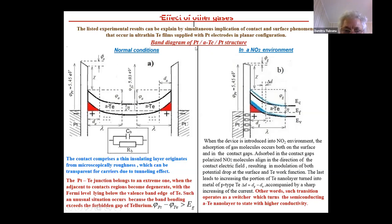Here you can see the band diagram of this platinum amorphous tellurium platinum structure. This structure comprises a thin insulated layer originated from the microscopically robustness, which can be transparent for carriers due to tunneling effect.